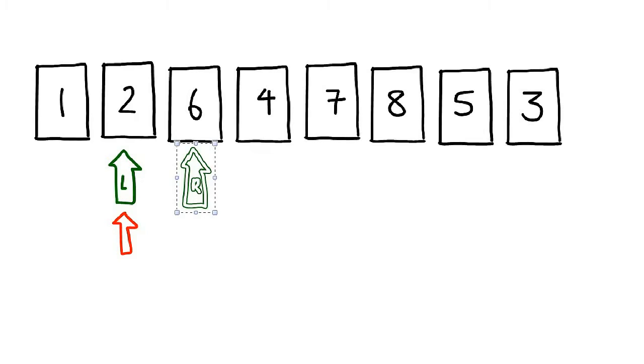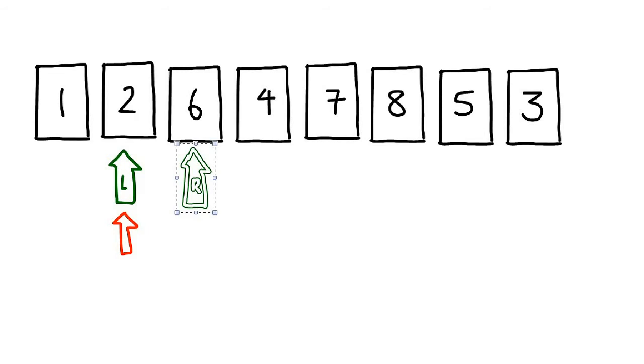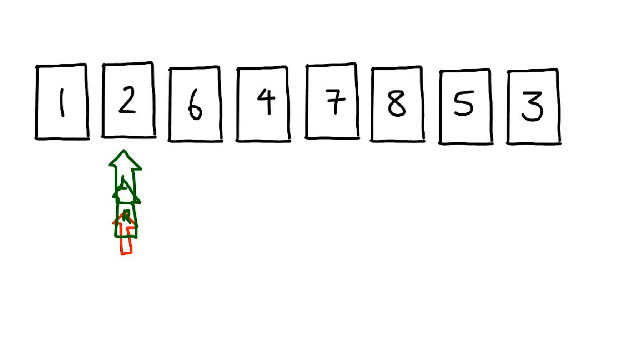Now notice what happens: it moves once more, and now the left pointer, right pointer, and pivot are all on the same item. This is actually our terminating condition. Once the left and right pointers overlap, that's it — it's done. That pass has been completed.